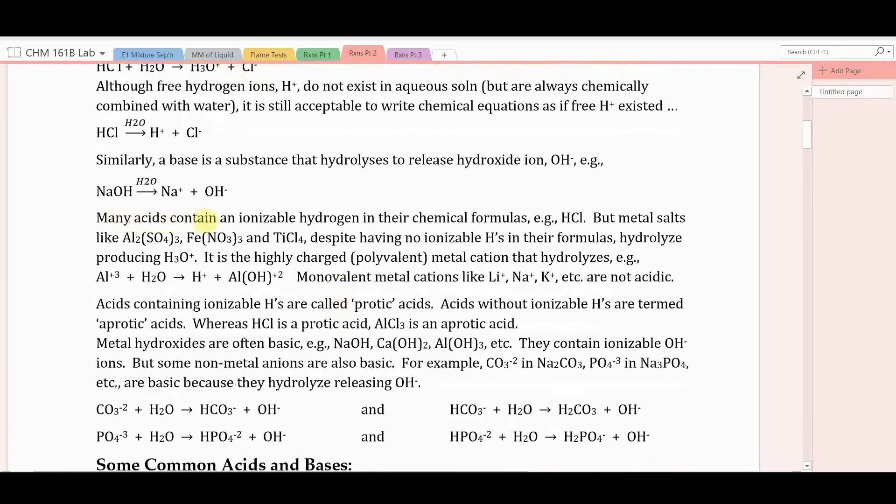Many acids contain ionizable hydrogen in their chemical formulas. For example, the hydrogen in HCl is ionizable. But metal salts like aluminum sulfate, ferric nitrate, titanium chloride, despite having no ionizable hydrogens in their formula, will hydrolyze producing hydronium ion.